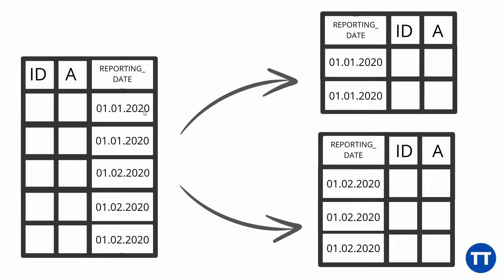We now define a partition on this reporting date column, defined by a range. You can usually partition by a list of values, by a range, or by a hash — though this depends on the DBMS you are using. These are the most common options available.